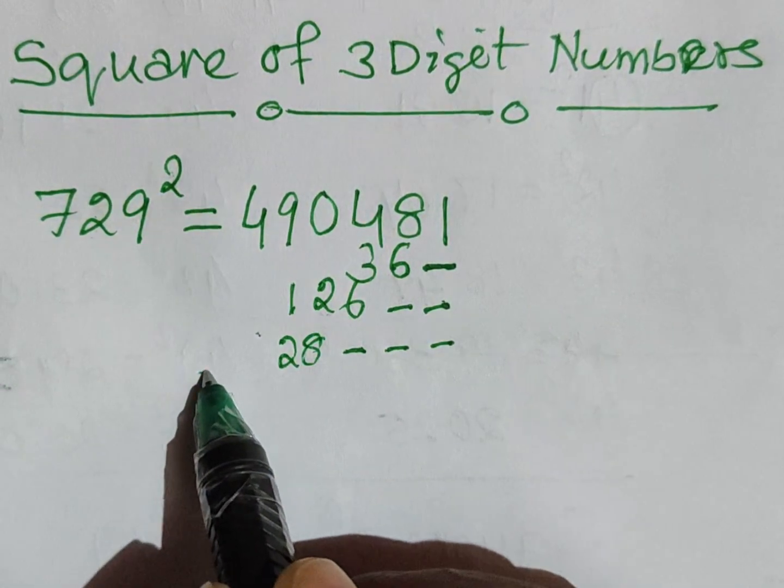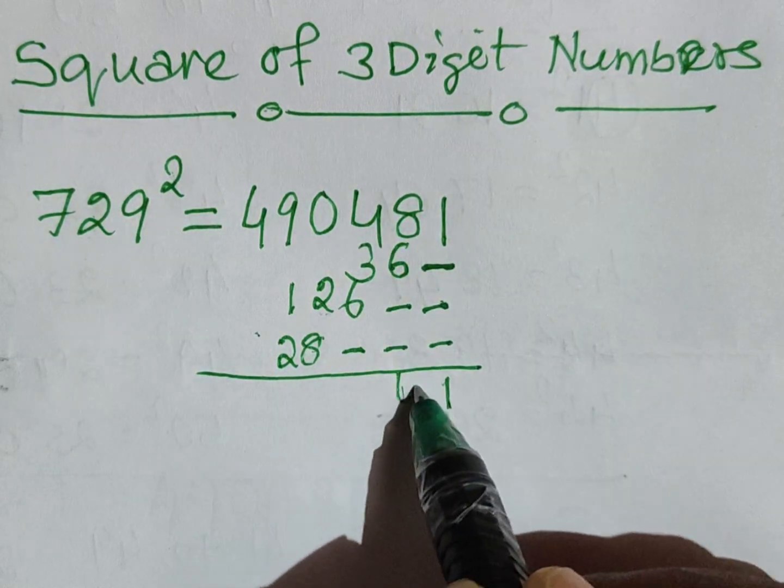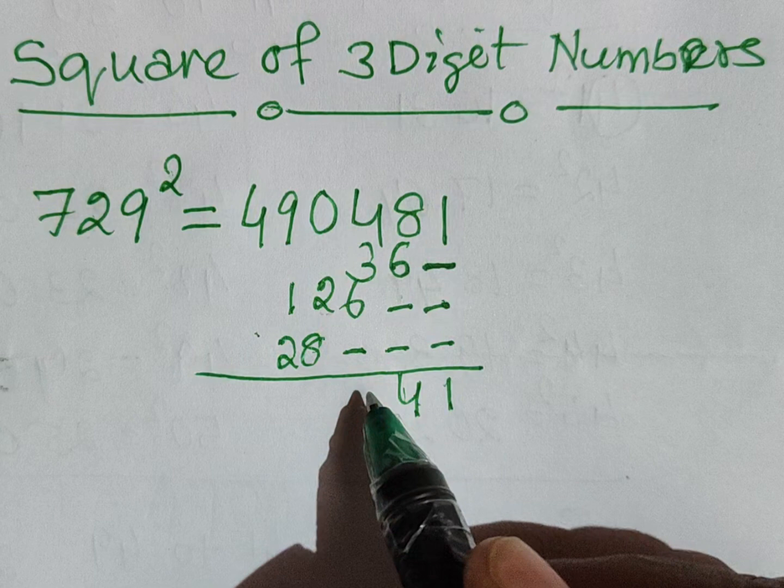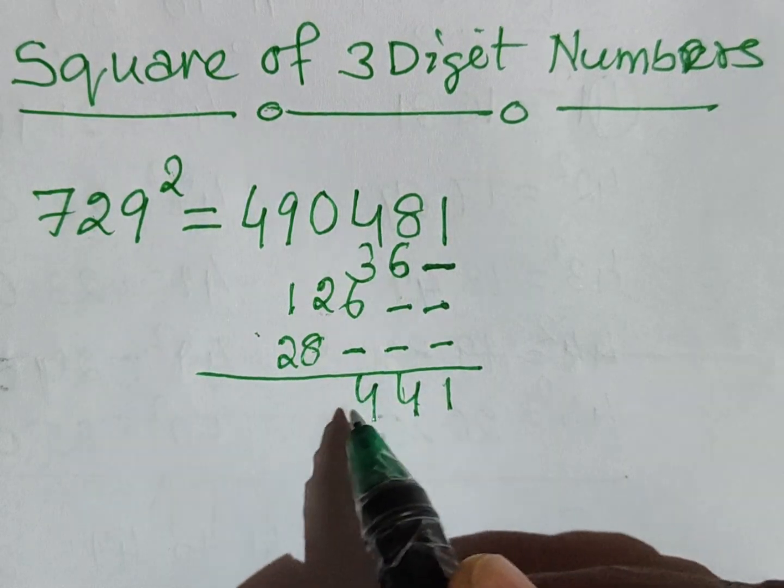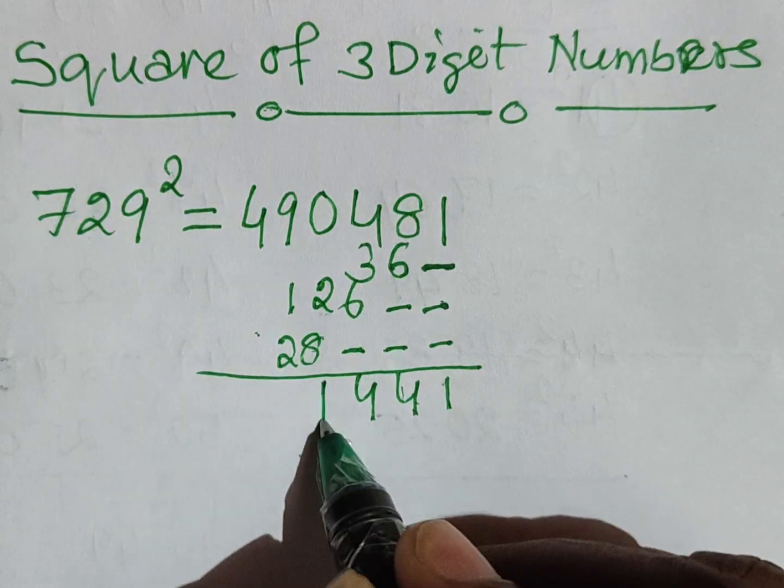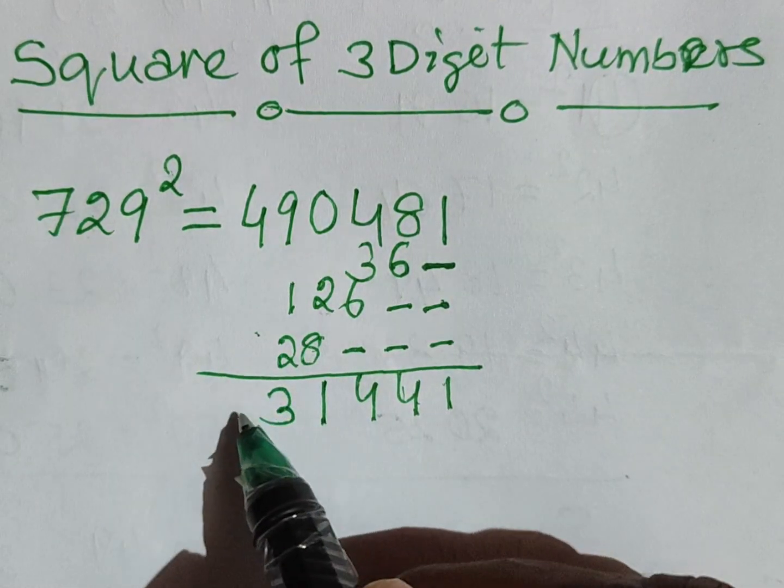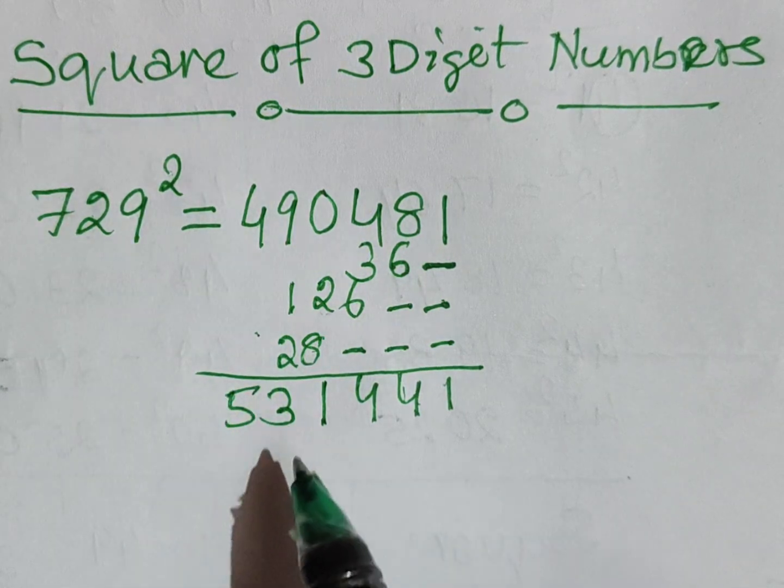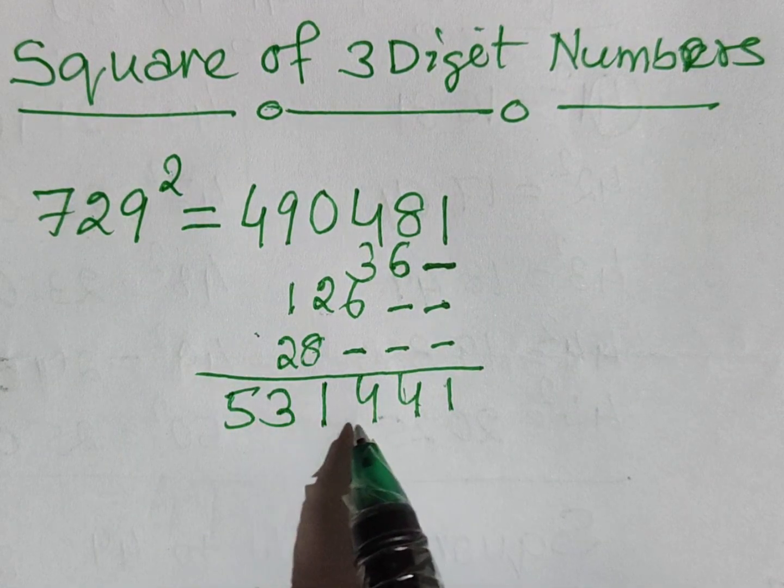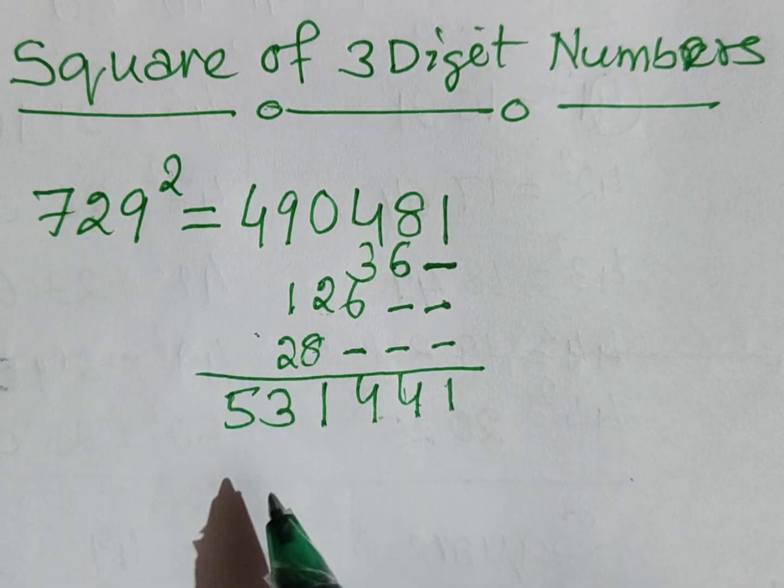Now add: 1, 14, again 14, 11. The total sum is 531,441. This is the square of 729.